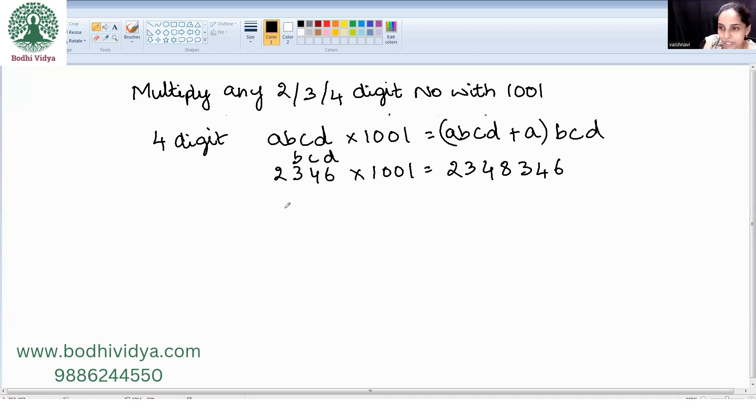Let us look at a few more examples. 7483 into 1001. It is 7483 plus 7, which is 7490, then 483. So the answer is 7490483.